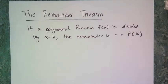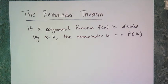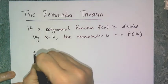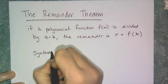The first of the polynomial theorems is the remainder theorem. This is what the theorem says: if a polynomial function f of x is divided by x minus k, the remainder is r, which also equals f of k. What this means is that synthetic division can be used to evaluate a polynomial function, and that's called synthetic substitution.